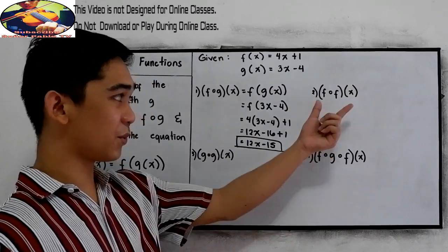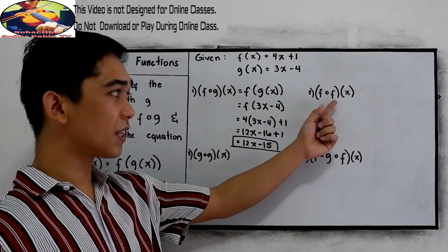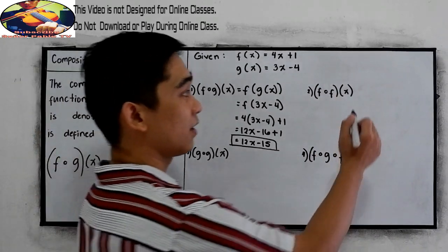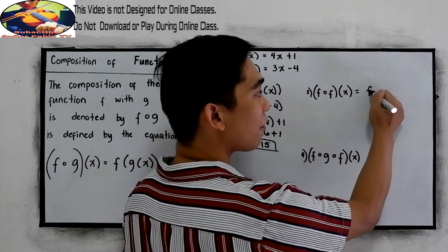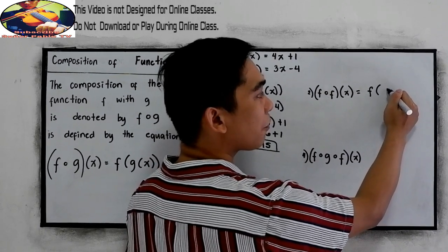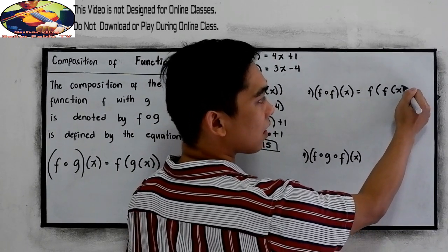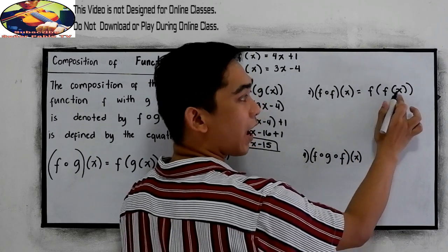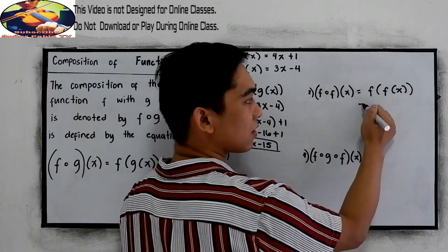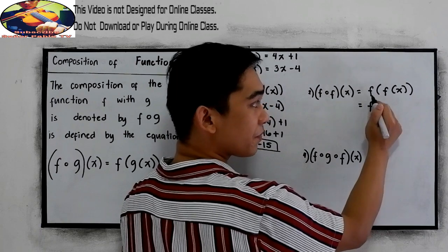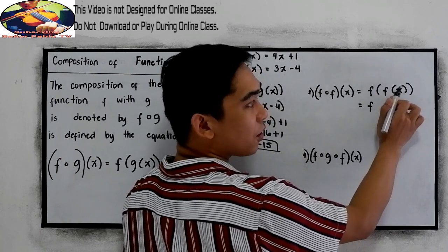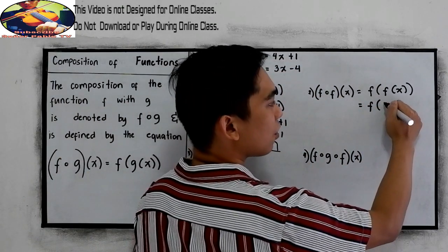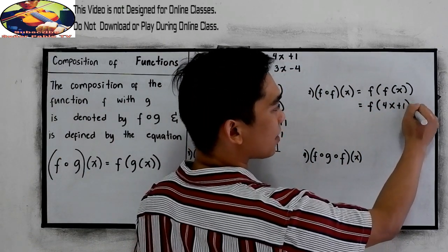Let's proceed to number 2: f composed of f of x, which is the same as f of f of x. So we copy f, then find f of x. F of x is 4x plus 1.